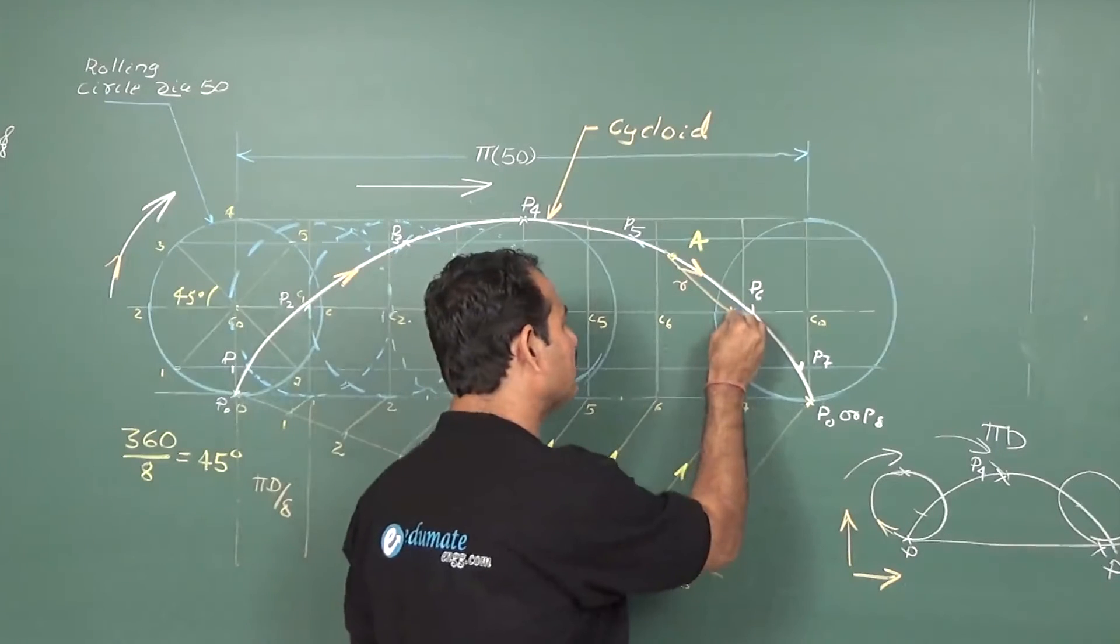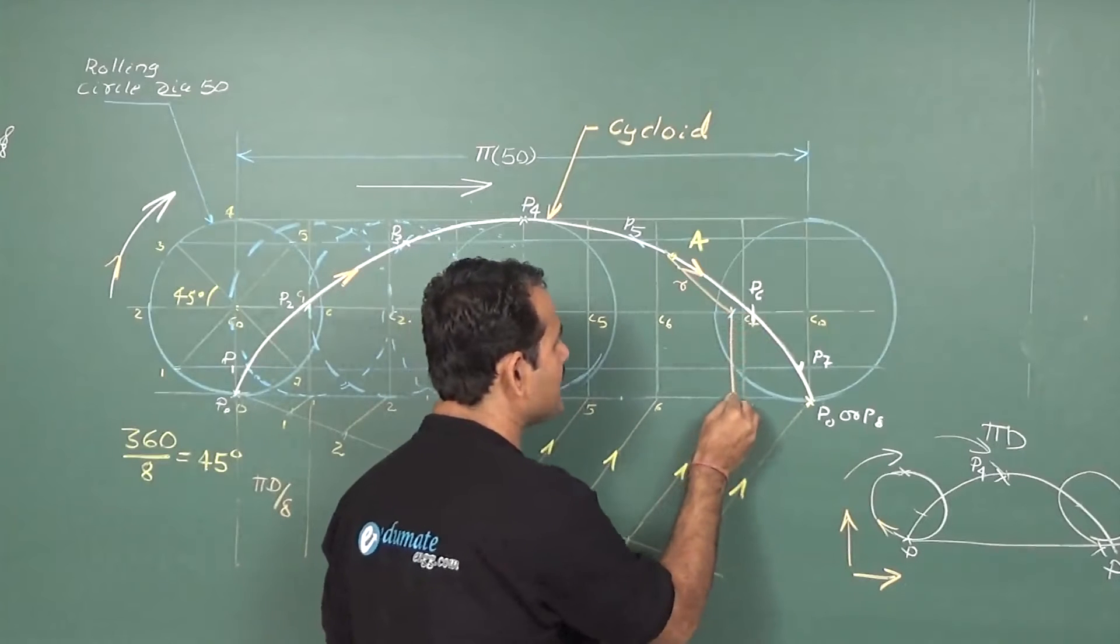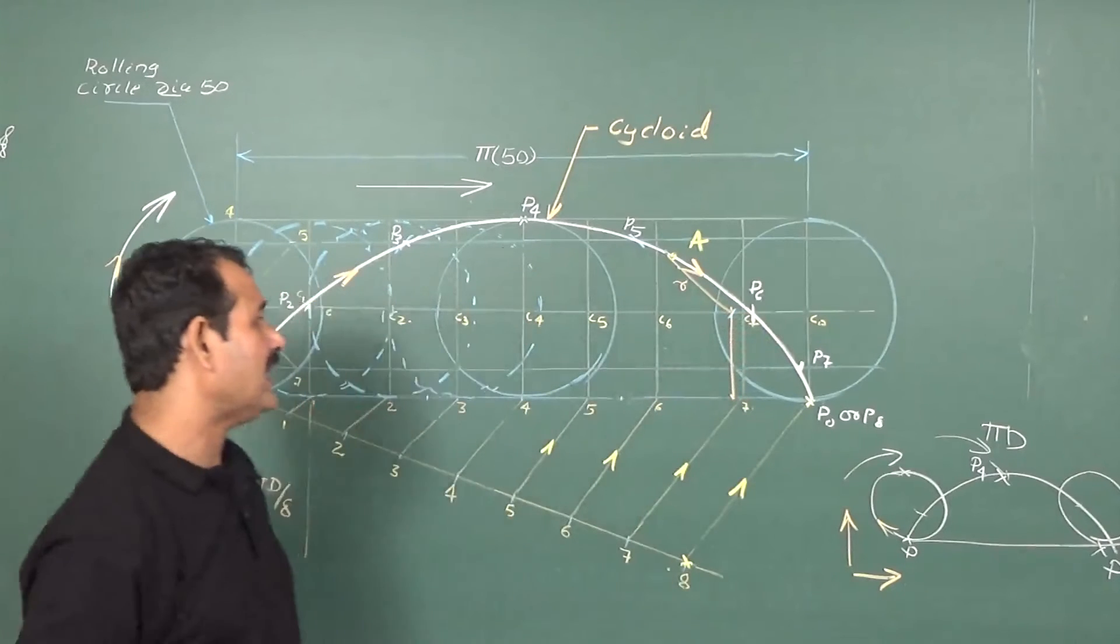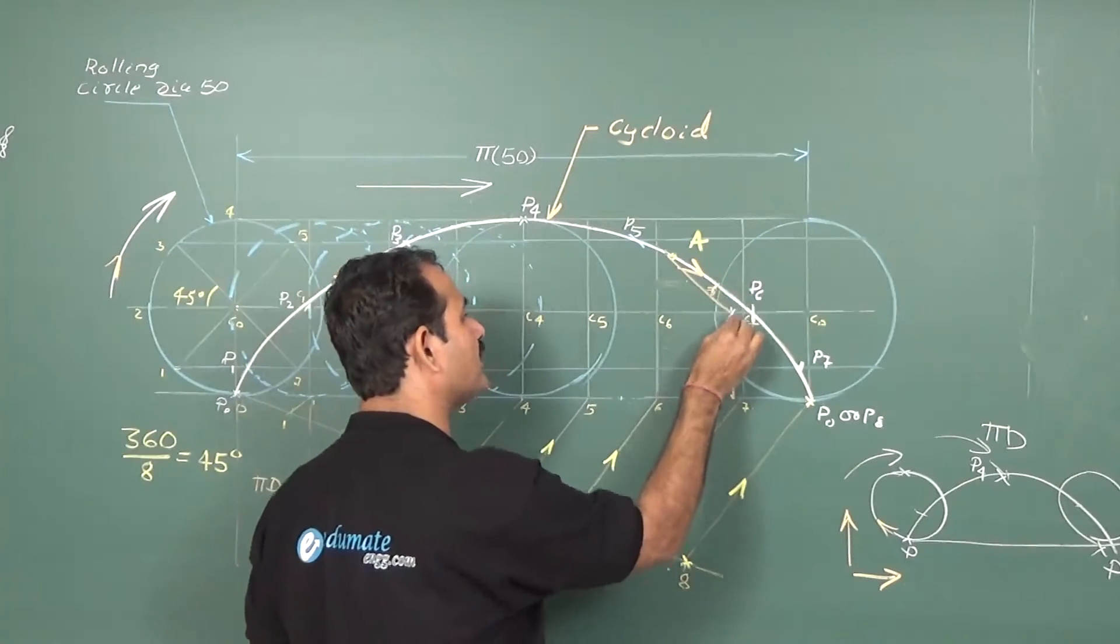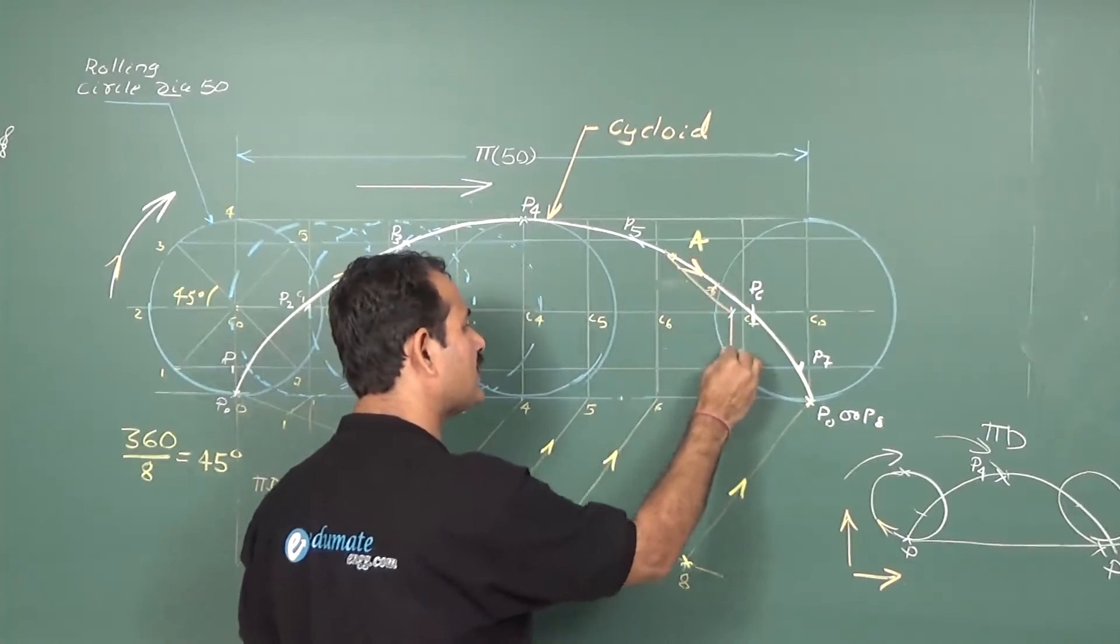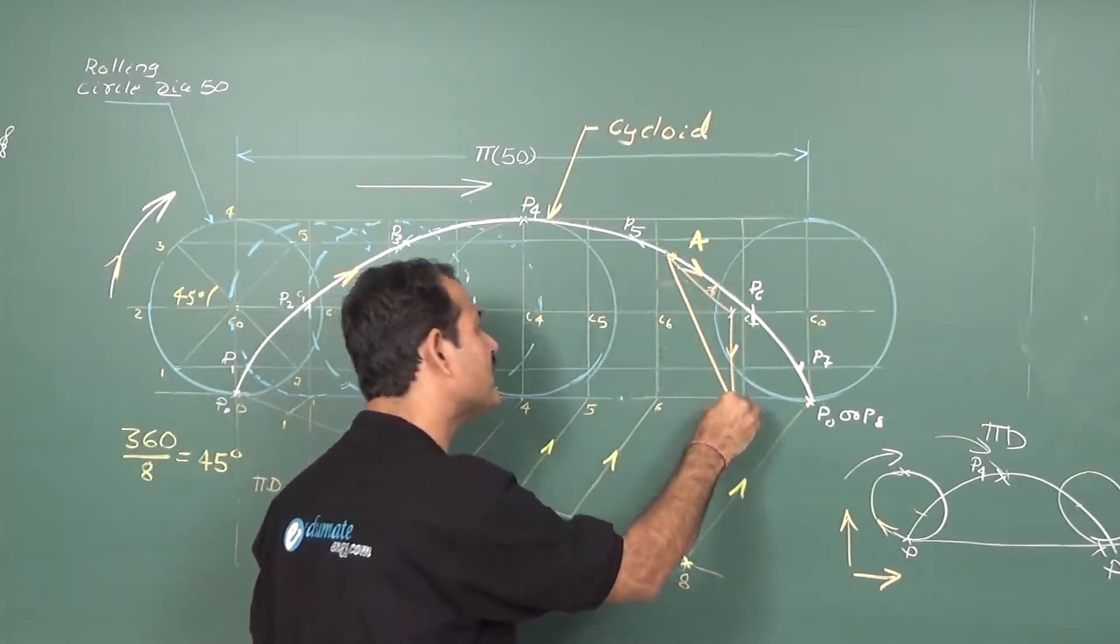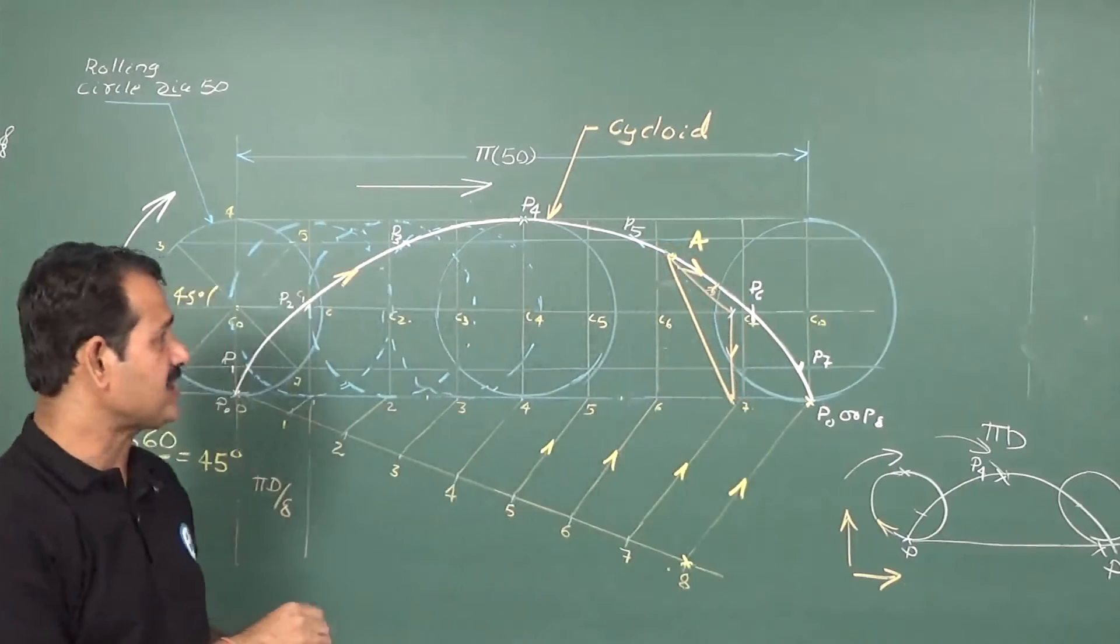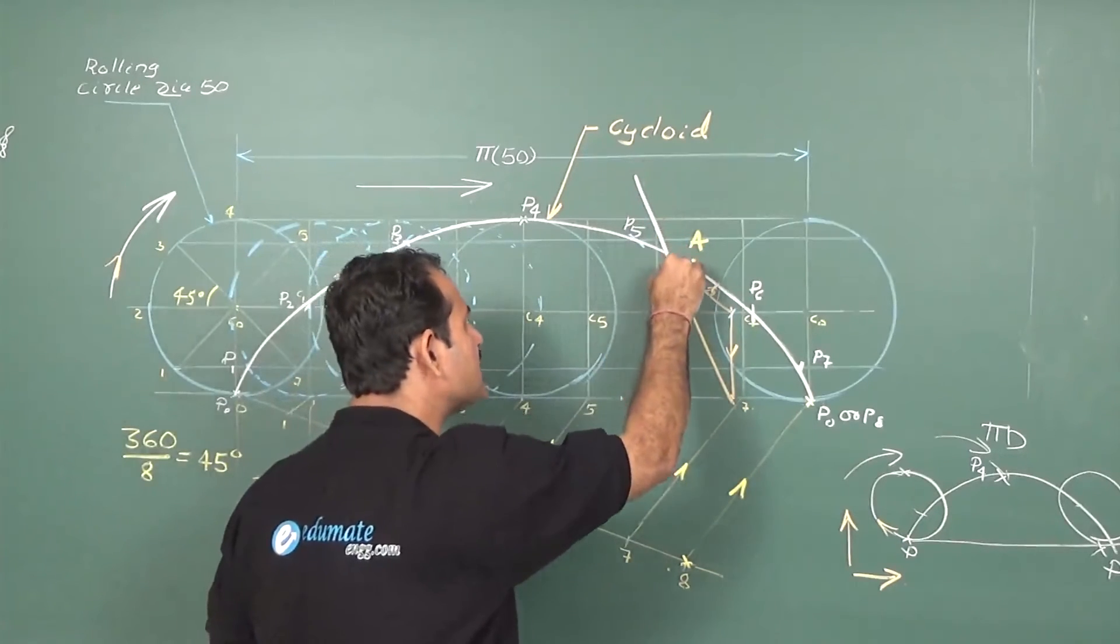Later on, drop a vertical line to touch the base line. Connect from here to the center. Drop a vertical line. Then, connect from here to here. This line extended is going to give me the tangent for the curve.